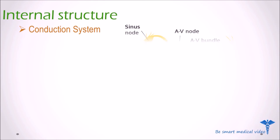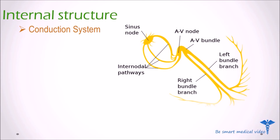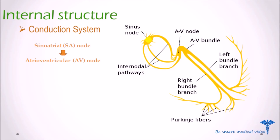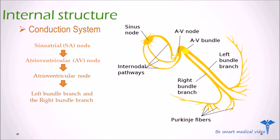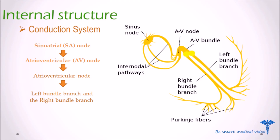The electrical signal travels through the network of conducting cells. Signals from the sinoatrial node must pass through the atrioventricular node to the atrioventricular bundle, which divides into the left bundle branch and the right bundle branch. The stimulus then travels further into the Purkinje fibers, which carry the electrical signal.